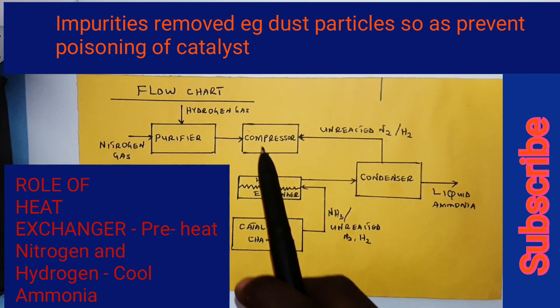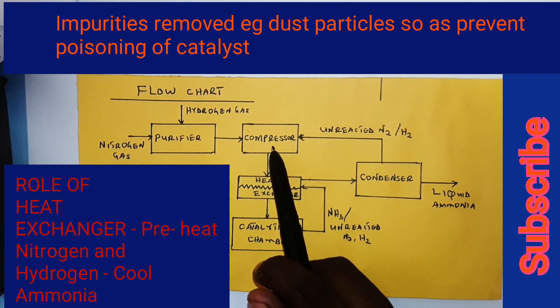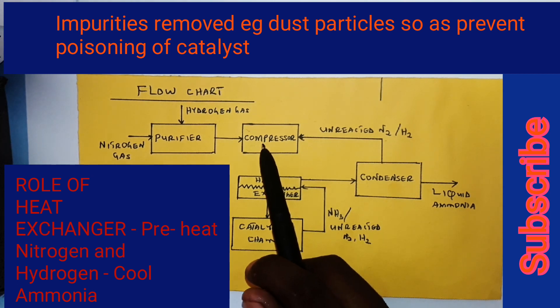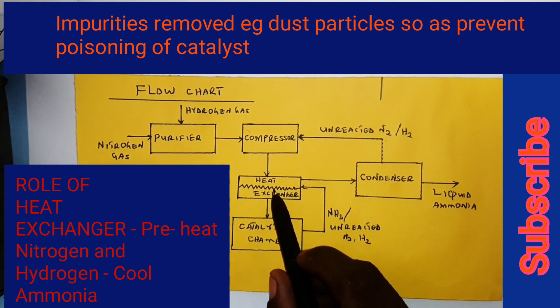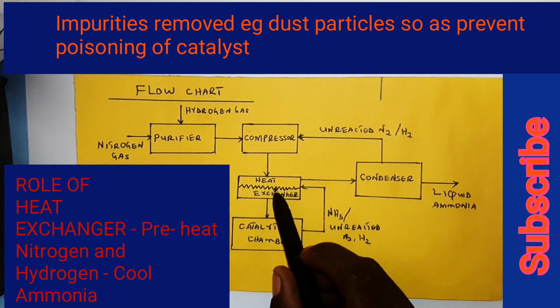After the removal of impurities, the nitrogen and hydrogen mixture are pumped into the compressor. Because the pressure required is about 200 to 500 atm, the compressor reduces the volume of the mixture to raise the pressure to about 200 to 500 atm. From the heat exchanger, the mixture of nitrogen and hydrogen is preheated to attain a suitable reaction temperature. They are then pumped into the catalytic chamber, where they are further heated to about 500°C and passed over finely divided iron catalyst, whereby nitrogen reacts with hydrogen to form ammonia gas.